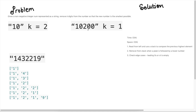Hey guys, Persistent Programmer here, and today we're going to do another quick question: Remove K Digits. So let's read this problem and understand what the question is asking. Given a non-negative integer num represented as a string, remove k digits from the number so that the new number is the smallest possible.